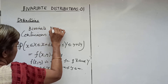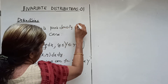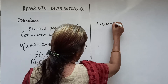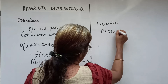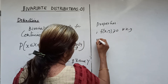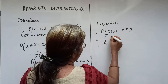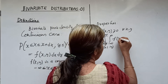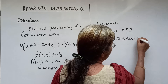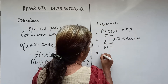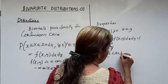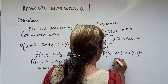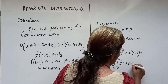This f of x y satisfies the following properties. Property 1: f of x y ≥ 0 for all x, y. Property 2: the double integral from minus infinity to plus infinity of f of x y dx dy equals 1. Property 3: the probability that a < x < b and c < y < d equals the integral from a to b and c to d of f of x y dx dy.